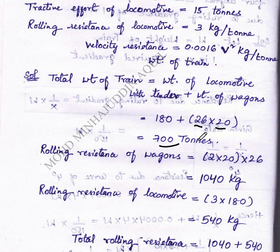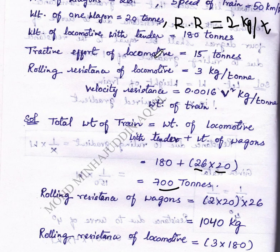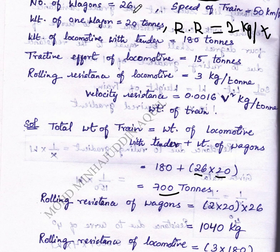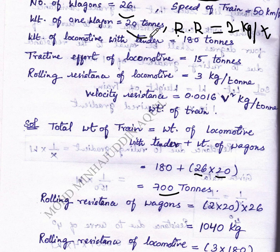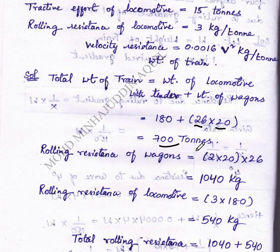The values are given as 180 plus 26 into 20 equals 700 tons. From there, number of wagons is 26 and weight of one wagon is 20 tons.